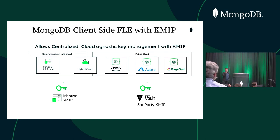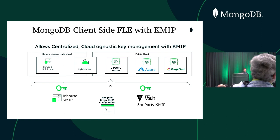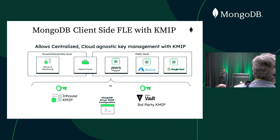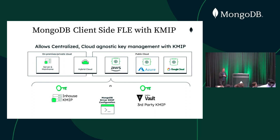This means keys are stored in one place with one unified API to create, rotate, encrypt, and decrypt — instead of using different cloud provider APIs, which adds complexity. When we use KMIP, we don't need routing logic because we use one API regardless of whether it's HashiCorp Vault or another provider. HashiCorp Vault is one vendor providing a KMIP endpoint, but there are others — you could also use an in-house KMIP server.